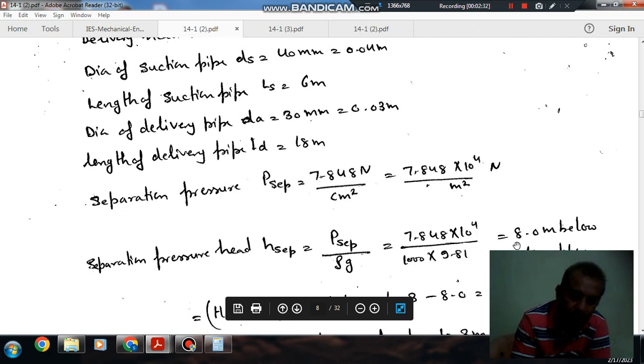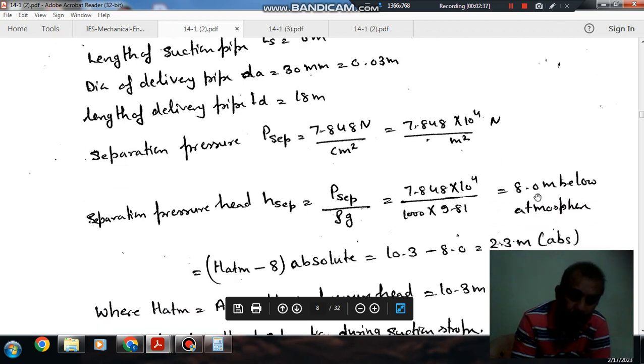So separation pressure will be 8 meters below the atmosphere. Since this is below atmosphere, absolute will be atmosphere minus this 8. So atmospheric head is 10.3 and this is 8, so absolute pressure is 2.3 meters. That is your separation head.